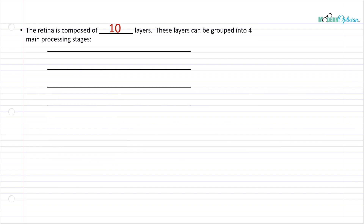The retina is composed of 10 layers. We're not going to discuss every single layer because it really doesn't give you any perks in understanding it better. If you're interested and want to dig deeper, a quick Google search or any ocular anatomy textbook will go through every single layer. However, it's not really pertinent to what we're trying to learn here. Without naming all 10 layers, we can talk about how they're grouped into four main processing stages. The first stage involves photoreception — capturing the light.